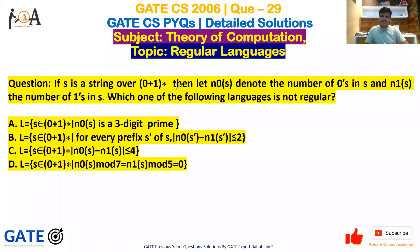Hey guys, a very warm welcome to Arihant Online Academy. In this video, we are going to discuss a very important question. If s is a string over (0+1)* then let n0(s) denote the number of zeros in s and n1(s) the number of ones in the string.